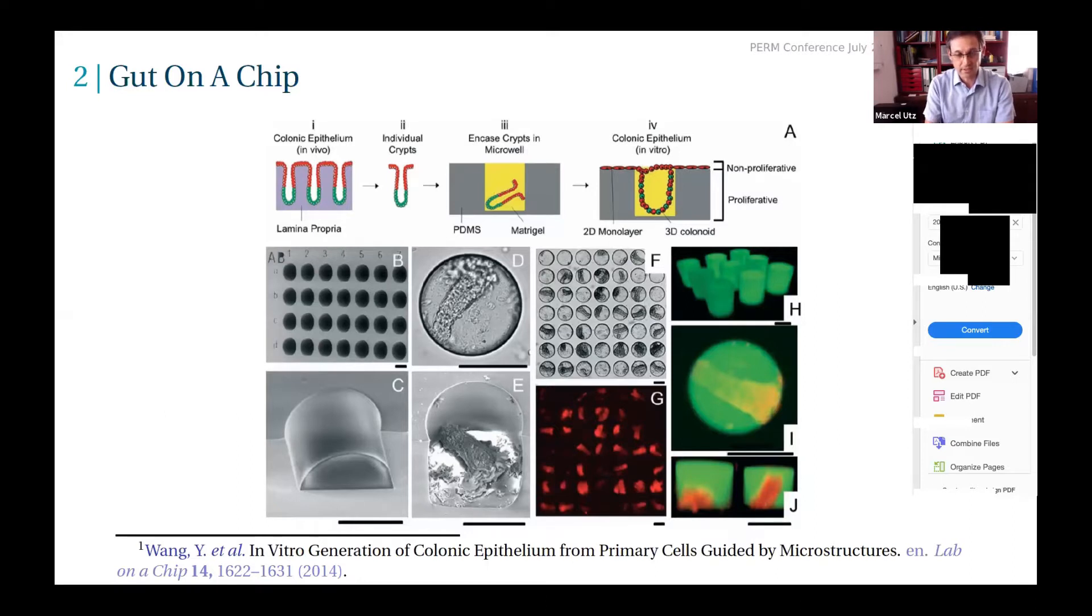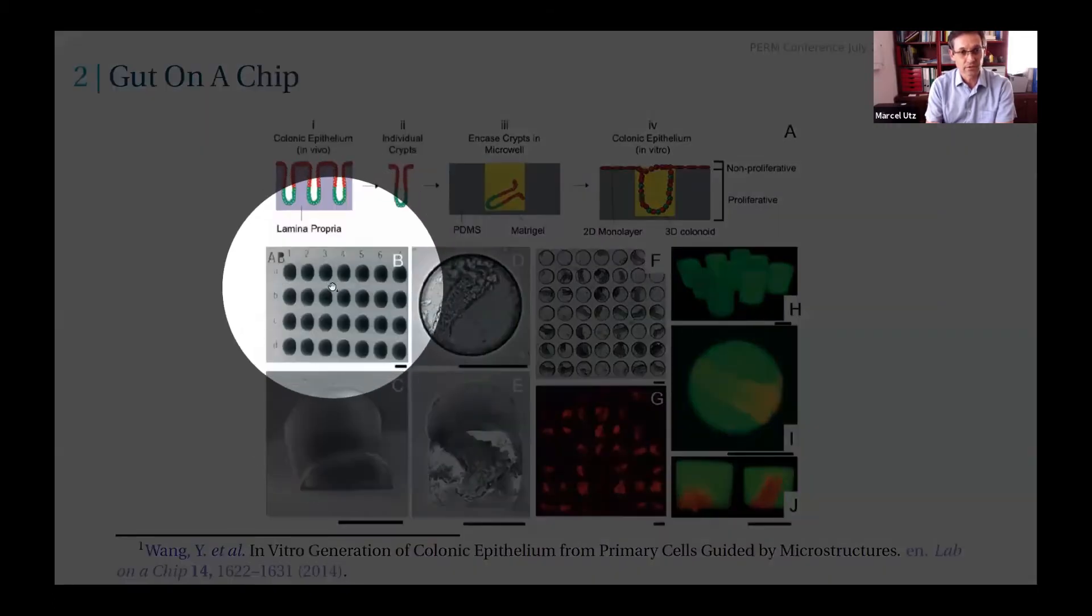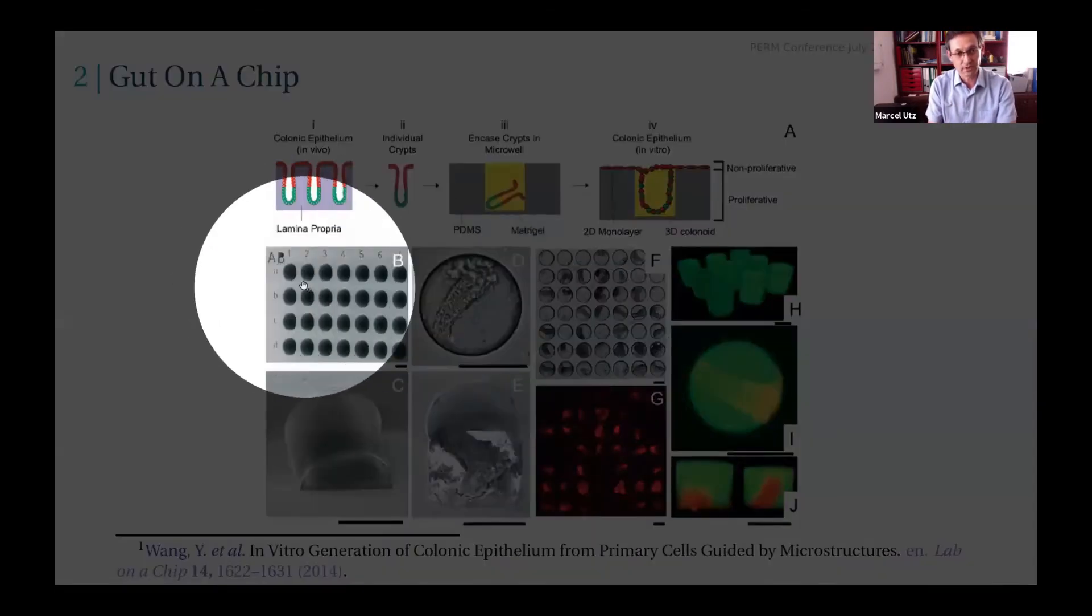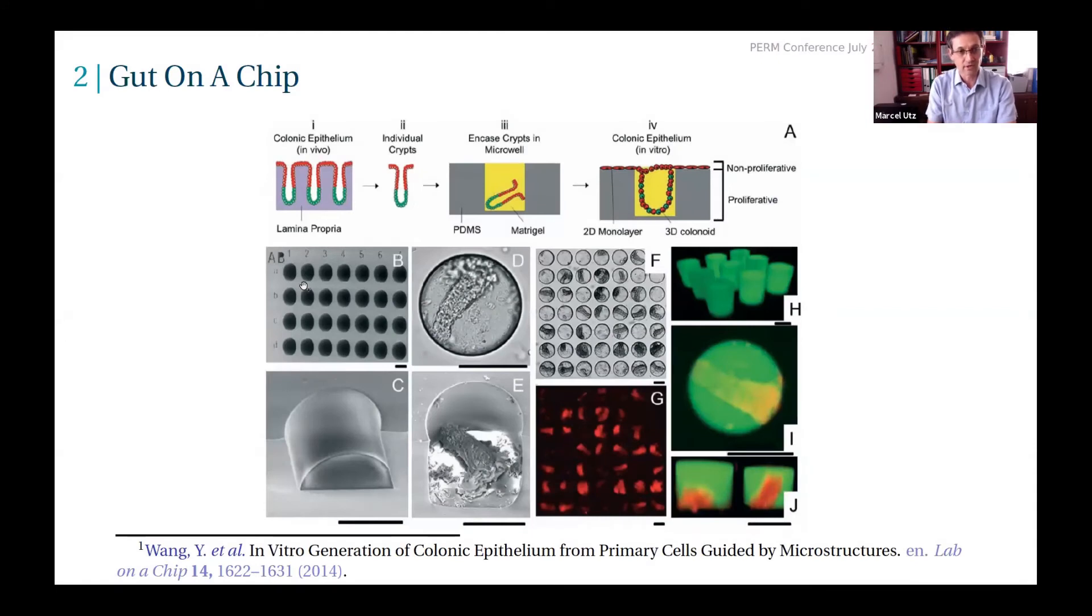Here is an example of a gut-on-a-chip. What the colleagues here at UNC Nancy Alberton's group have been doing is they built these structures—essentially just microfabricated holes—and they seed them with the right kind of stem cells under the right conditions. These stem cells then develop into structures that are very similar to the microvilli that make up the functional units of the gut. Essentially they're using structure generated by microfabrication together with biology to induce self-organization, and they can modify the structure and study this process in great detail.